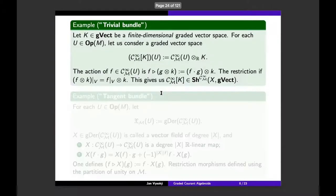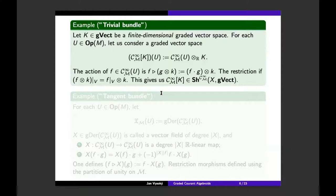An example of a sheaf of C^∞M-modules is the trivial bundle. I take a finite-dimensional graded vector space K and for each open subset define the tensor product of my graded algebra over U with K over R. The action of a function is given by multiplying the first component by f. The restriction simply restricts the first part using the restriction in the sheaf of functions. This gives a very nice sheaf of C^∞M-modules which I call the trivial bundle.